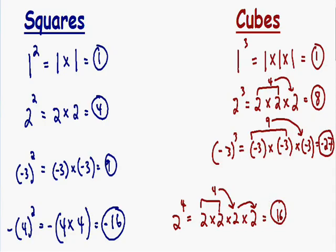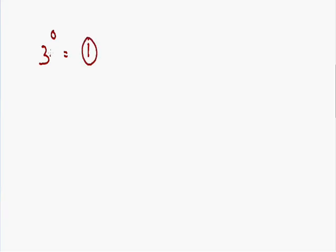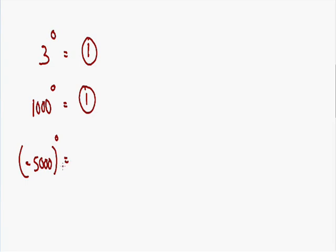I hope you get the idea on exponents. Let's go over a couple more examples that might confuse you — when you have a 0 as an exponent. Let's say we had 3 raised to the 0 exponent. Any time you see a 0 in the exponent, the answer is always going to be 1. So 3 to the 0 is equal to 1. Even 1,000 to the 0 power is equal to 1, and negative 5,000 with a 0 exponent is also equal to positive 1. Anything with a 0 in the exponent is going to be equal to 1.